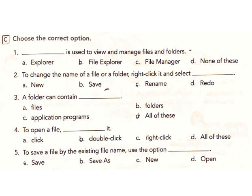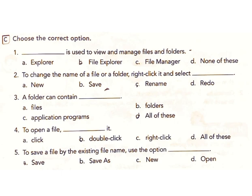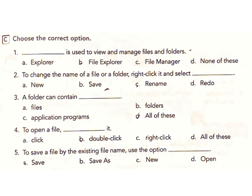C: Choose the correct option. 1. Which is used to view and manage files and folders? a) Explorer, b) File Explorer, c) File Manager, d) None of these. Answer: b) File Explorer. 2. To change the name of a file or a folder, right-click it and select — a) New, b) Save, c) Rename, d) Redo. Answer: c) Rename.